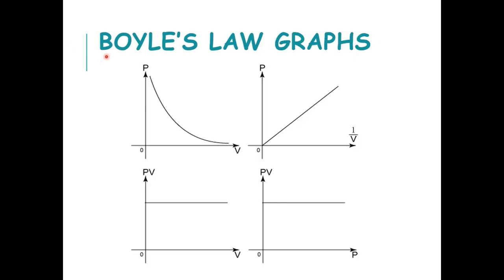Let's look at the graphs for Boyle's Law. If we plot pressure against volume, we get a hyperbola curve. If we plot pressure against 1/volume, we get a straight line with a positive gradient. Plotting PV against V and PV against P gives us a constant value.